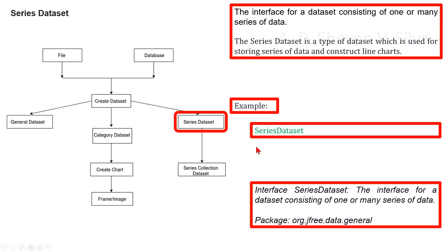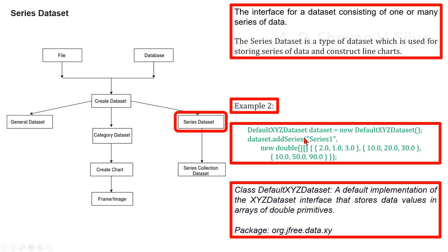As an example, we can consider the series dataset interface — the interface for a dataset consisting of one or many series of data. This is in package org.jfree.data.general.